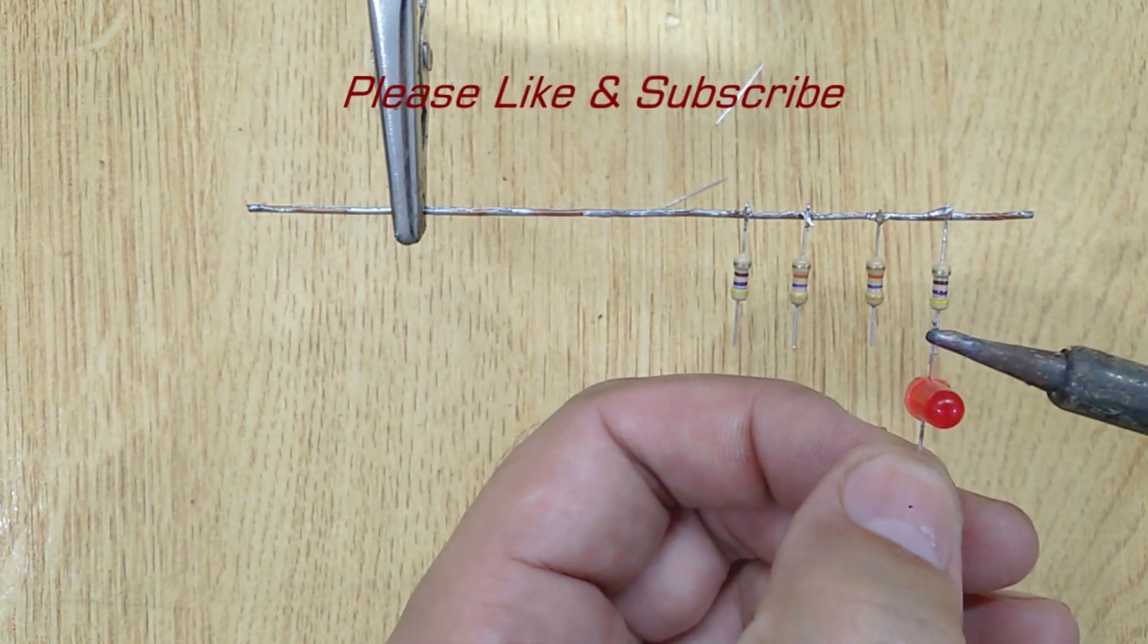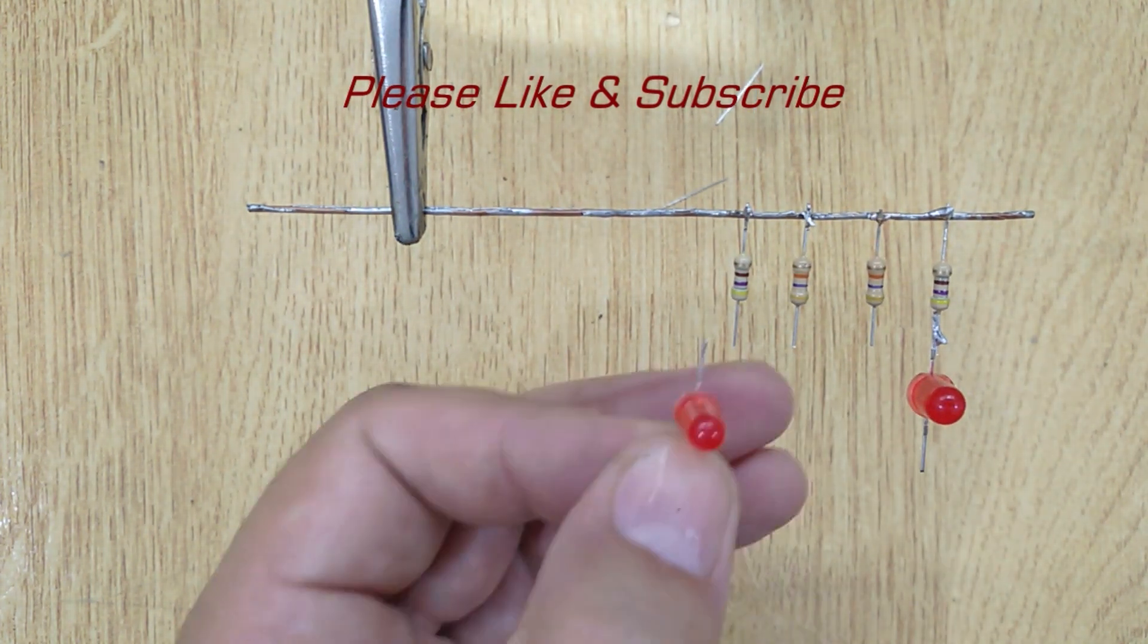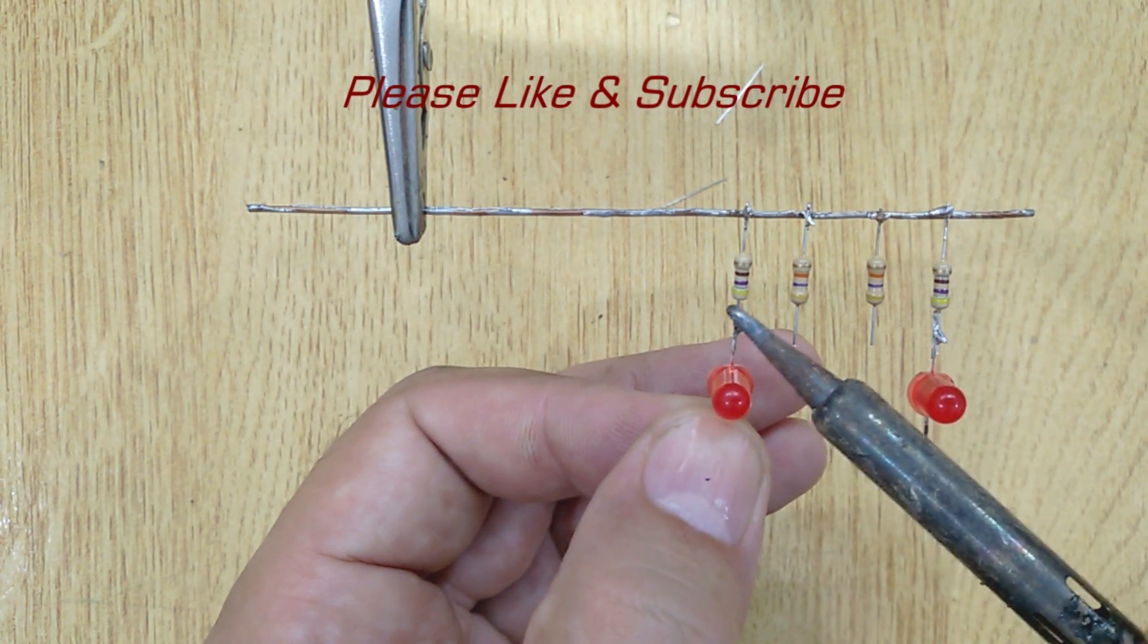Now get two LEDs and solder the positive pins of the LEDs with the 470 ohm resistors.